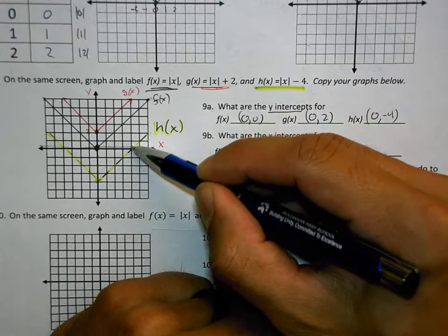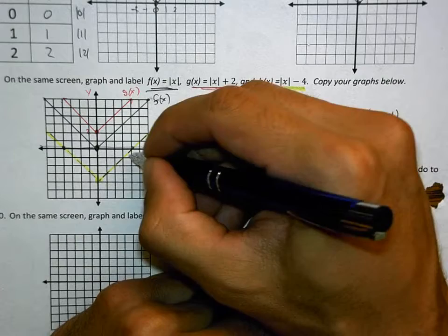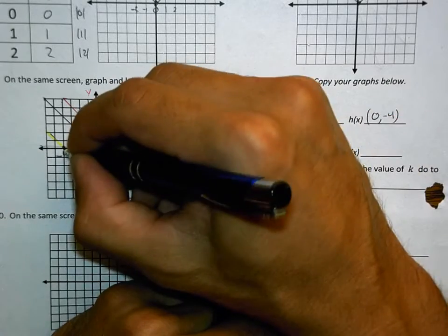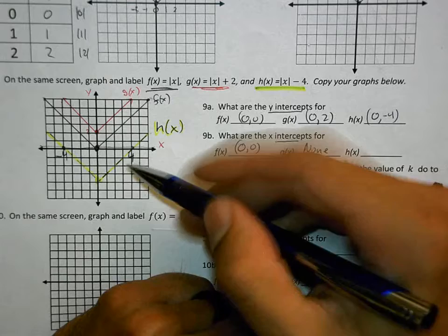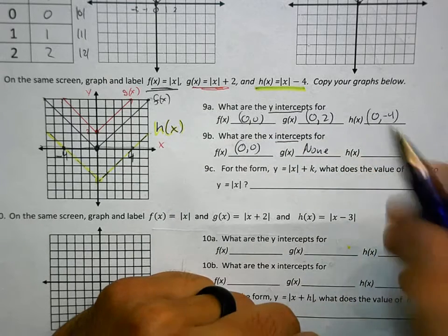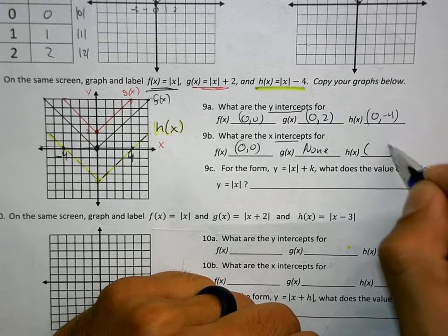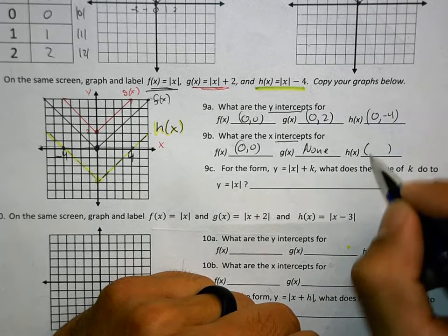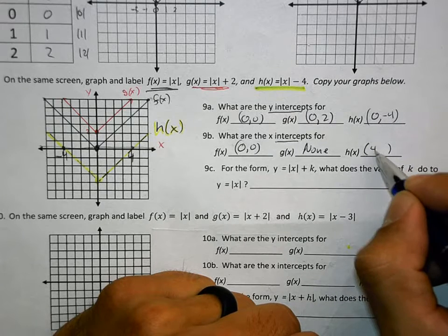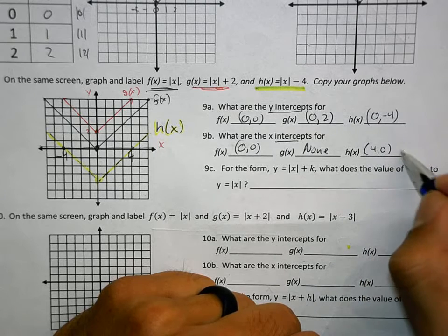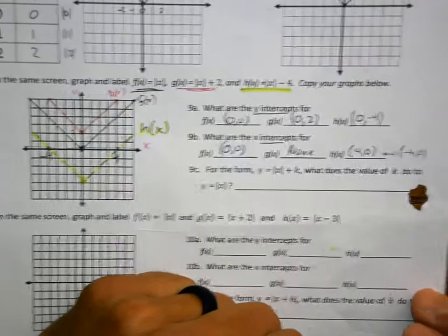It touches in this spot and this spot. And it would be helpful for you if you wrote the numbers down. How do I write it like a scholar? You can write it. You've got to get your scholar there. Four, comma, zero, and negative four, comma, zero.